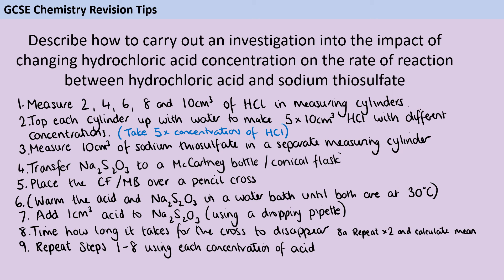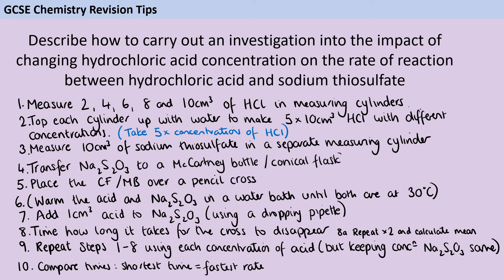Now comes the independent variable changing: repeat steps 1 to 8 using each of your different concentrations of acid. You might want to include that you're keeping the concentration of the sodium thiosulfate the same, because often in these questions there are marks for indicating the control variables. Finally, compare the data — the shortest time corresponds to the fastest rate. There's a lot of detail you can put in here, and you don't need everything I've written to get six marks. What we do need is a good method that would allow us to get the data to answer the question.